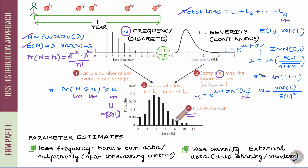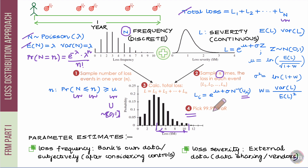The last step is to pick the 99.9 percentile loss, pick the expected loss, and find the distance between the two. That distance will be your estimate of the 99.9 percent operational risk VaR. This is the essence of the Loss Distribution Approach — stitching together a distribution chosen for frequency and a distribution chosen for severity.